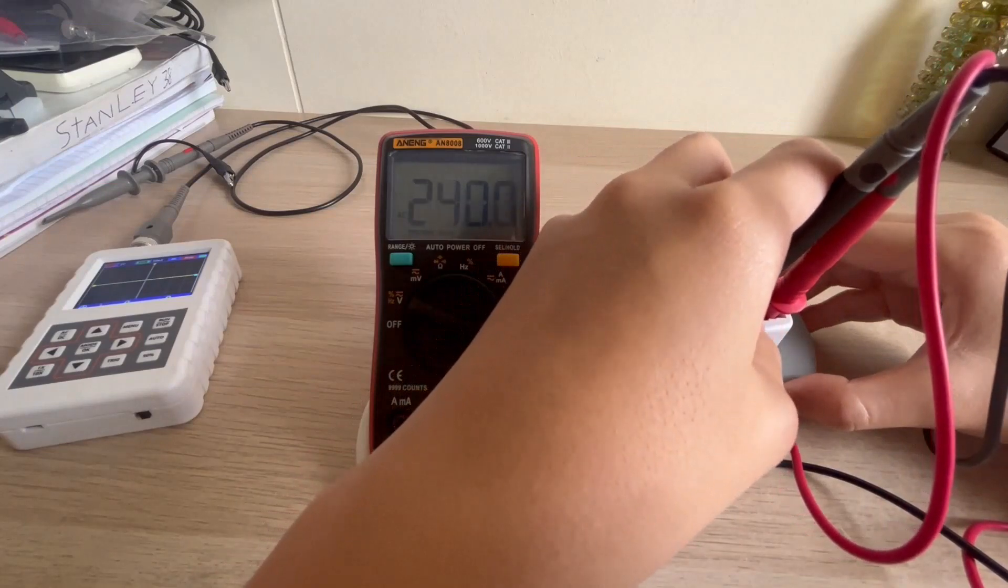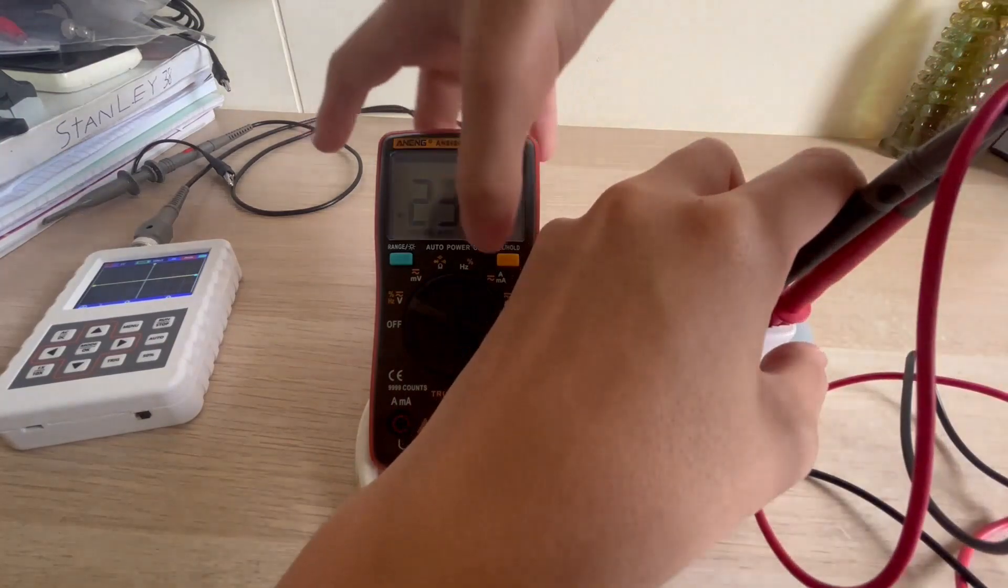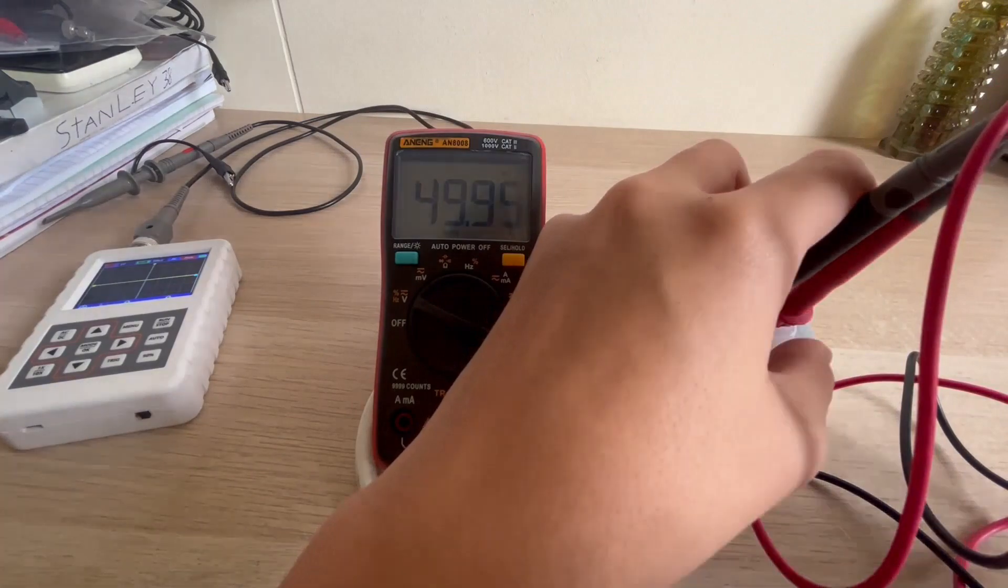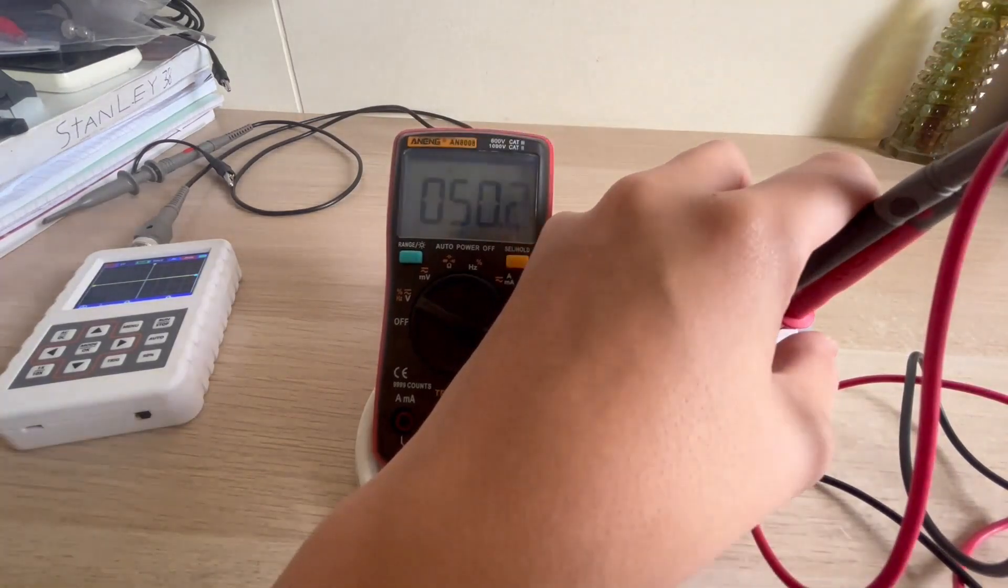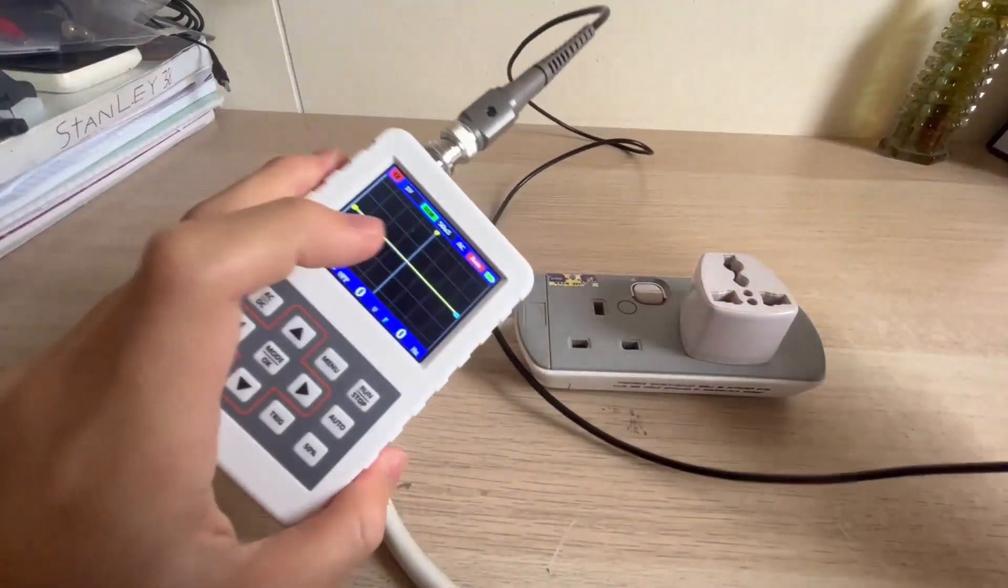You can see we have straight 240 volts AC with a frequency of around 50 hertz. Pretty nice and a duty of around 50 percent. Set it to 10 times before hand because we don't want to fry our own oscilloscope.